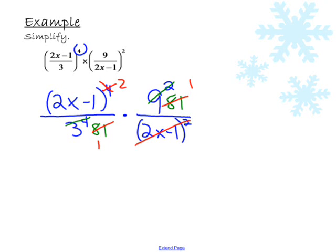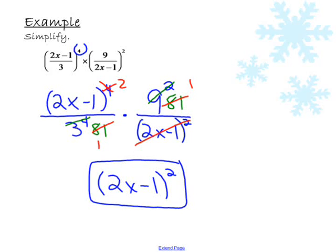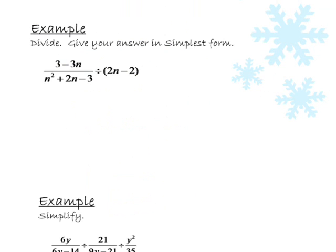So our final answer, since the denominator is all ones, is 2x minus 1 squared. I'm going to leave it just like that. A couple of division problems. These instructions can either say divide or they could say simplify. You'll know by the sign in the middle what you're supposed to be doing.